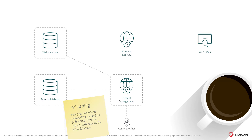During a publish operation, the content management role reads items from the master database and moves them to the target of the publishing operation — the web database. Through the content management role, it's possible to preview the content potentially being published, and also view the final published content available in the web database.